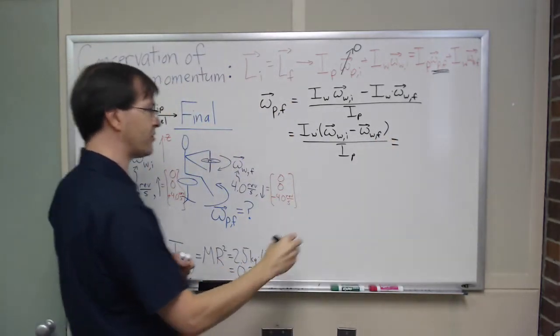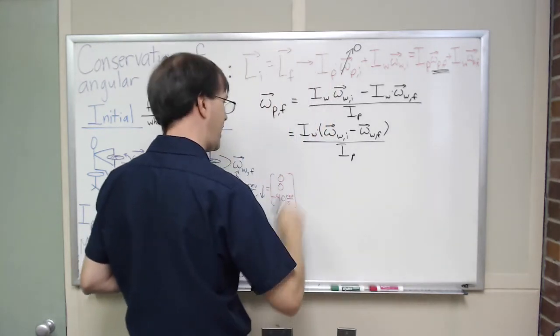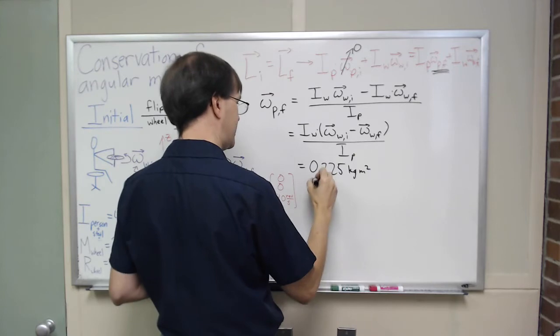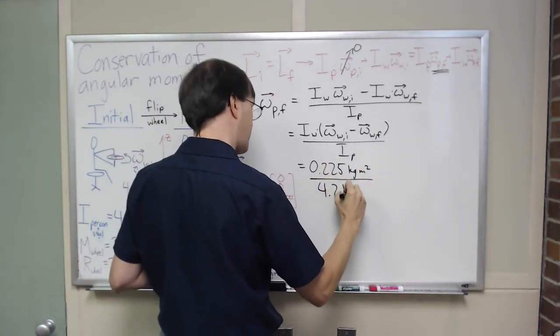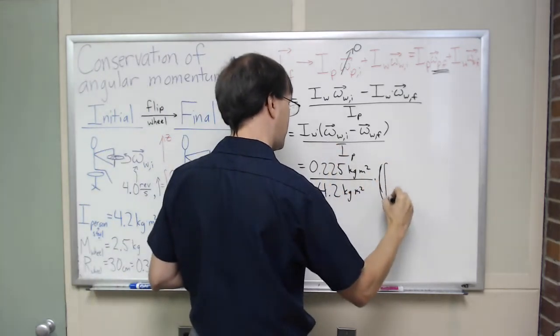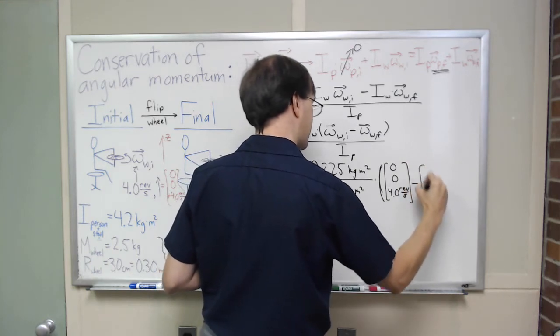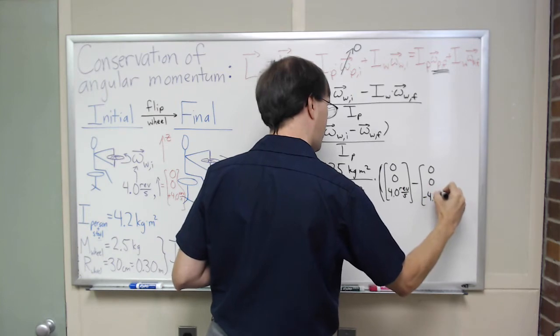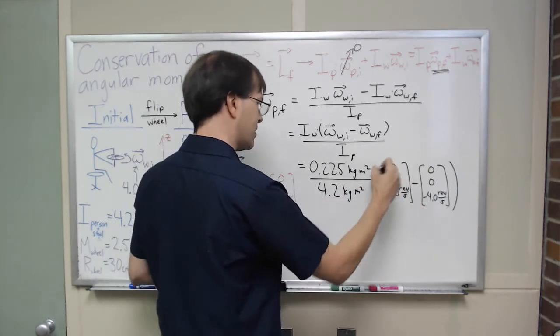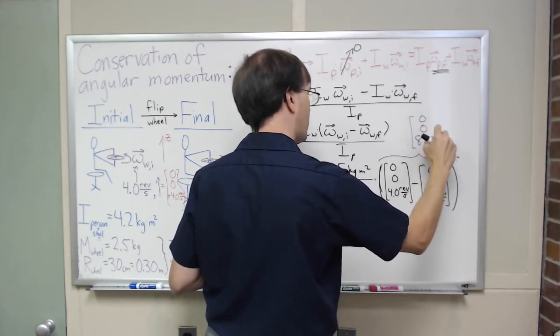My I wheel, we just said down here was 0.225 kilogram meters squared, and I did not leave myself a number, I'm going to do this on the next row, because this doesn't have room. So, I get 0.225 kilogram meters squared divided by 4.2 kilogram meters squared times, and my vectors here, omega wheel initial was 0, 0, 4.0 revolutions per second minus 0, 0, negative 4.0 revolutions per second, that's my subtraction, and minus the negative is a positive, this just comes out to 8.0 revolutions per second, so this whole term combines together into 0, 0, 8.0 revolutions per second.